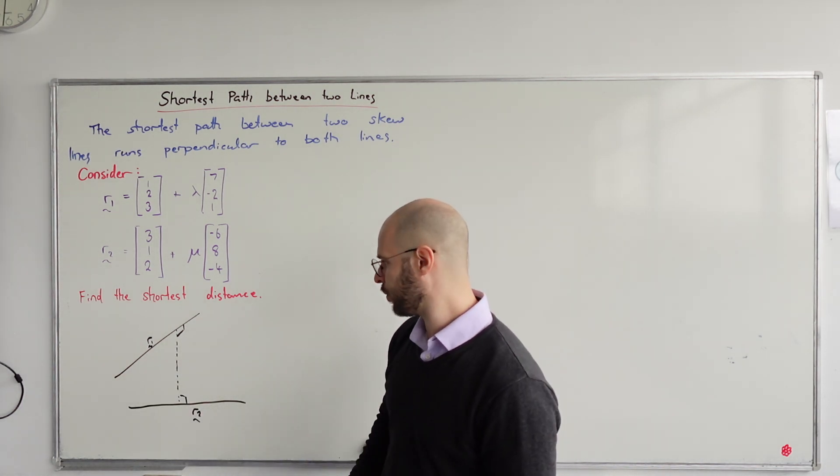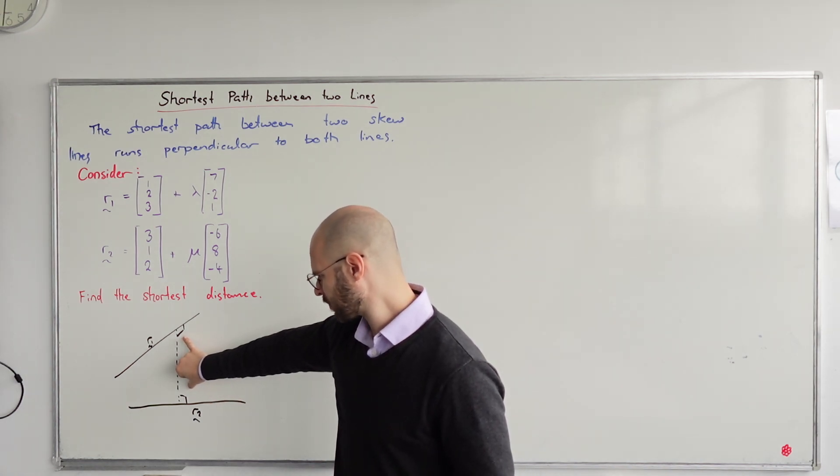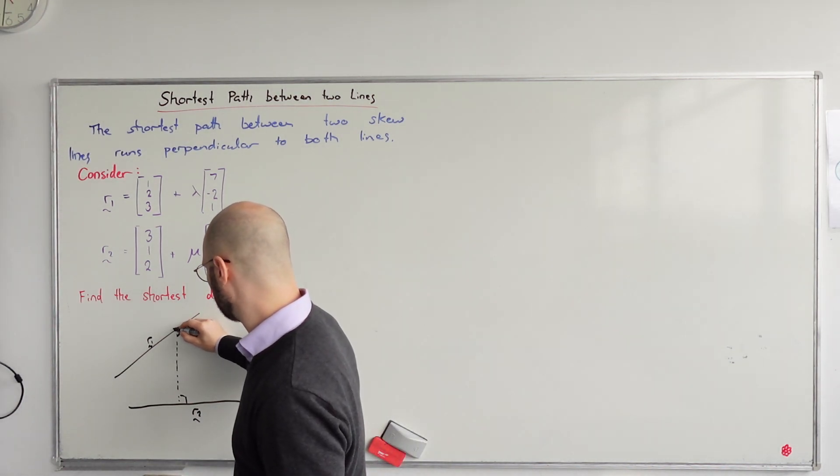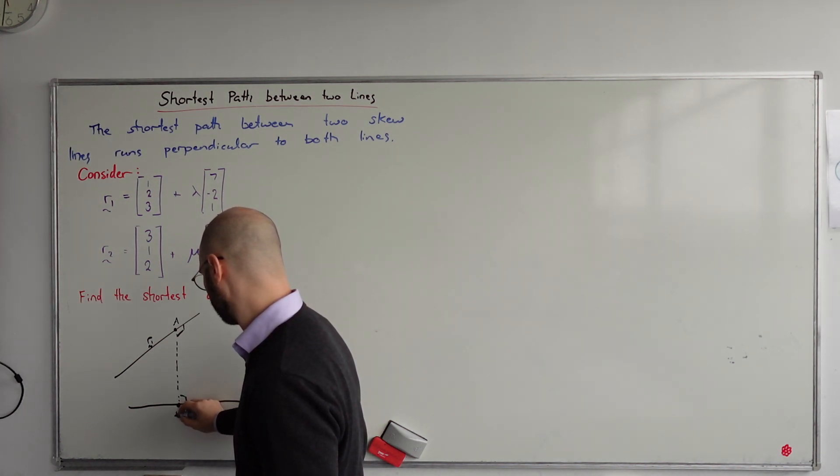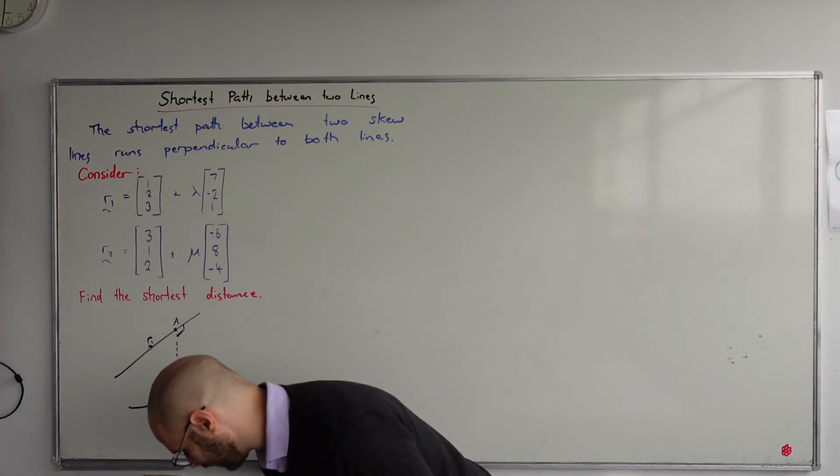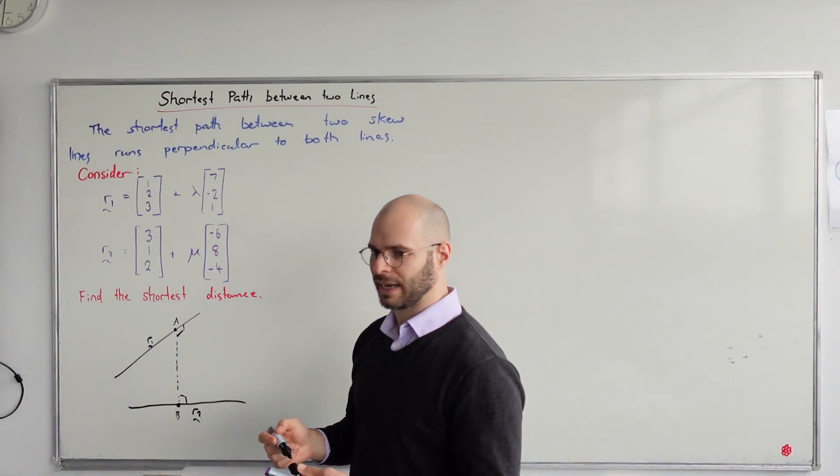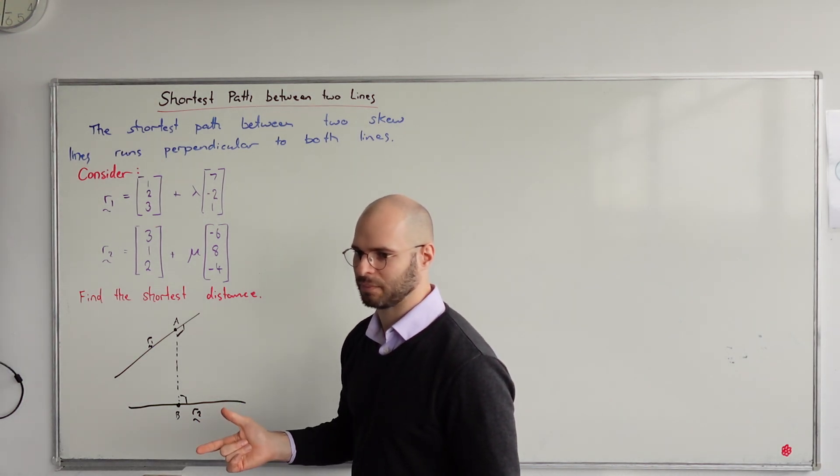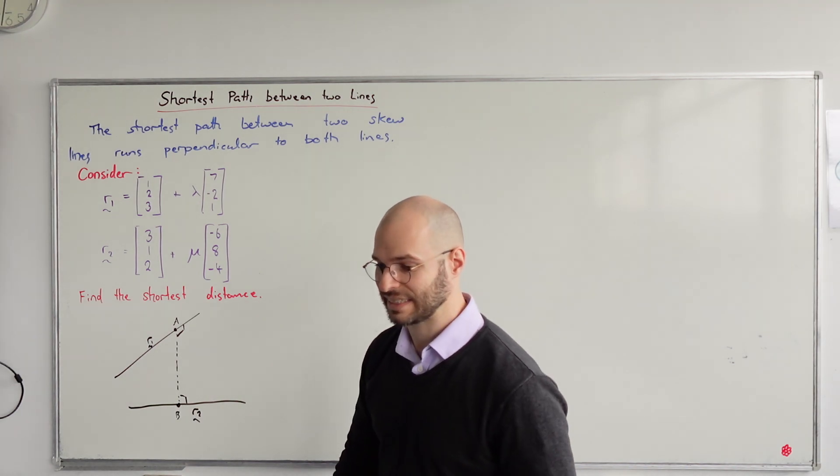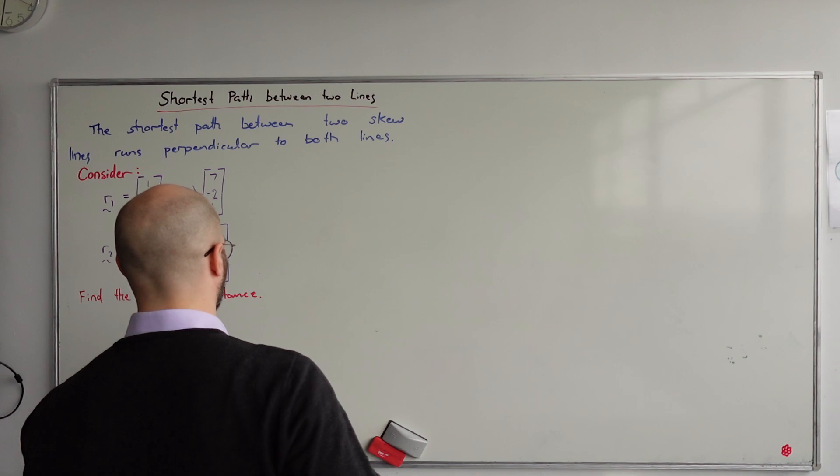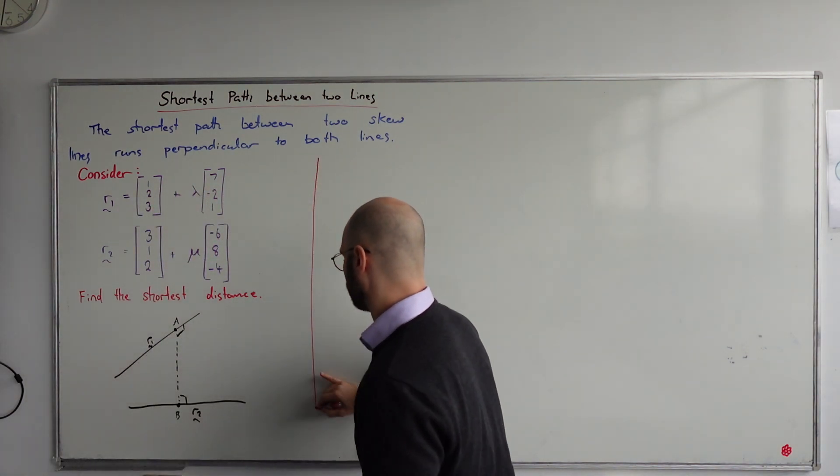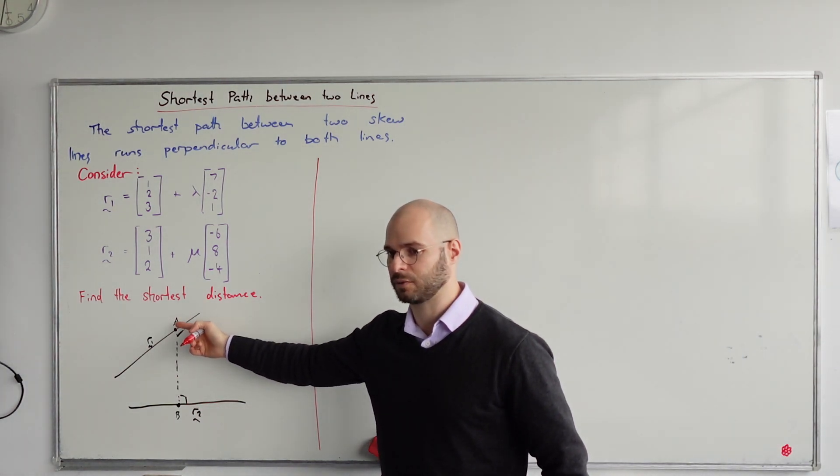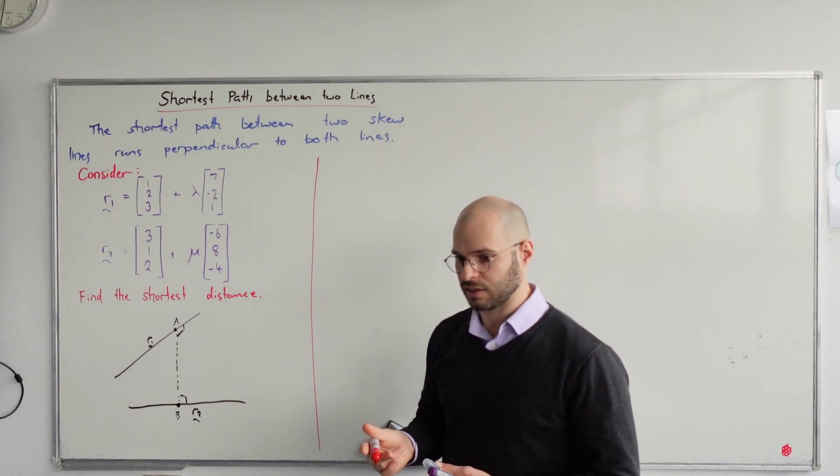What we're going to do is find the vector that connects point A to point B. Suppose this point is A and this point is B. We're going to find where points A and B are located, find the vector between points A and B, then find the magnitude of vector AB to find the shortest distance.